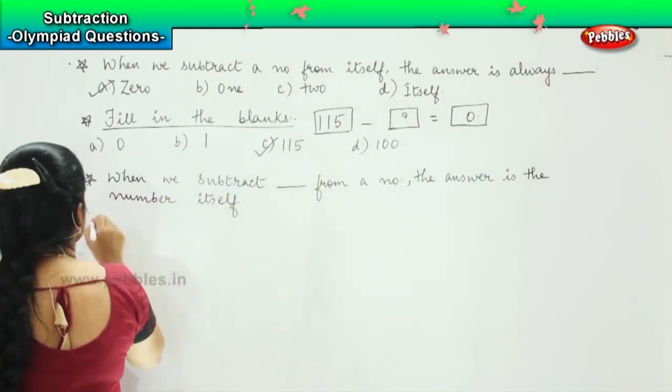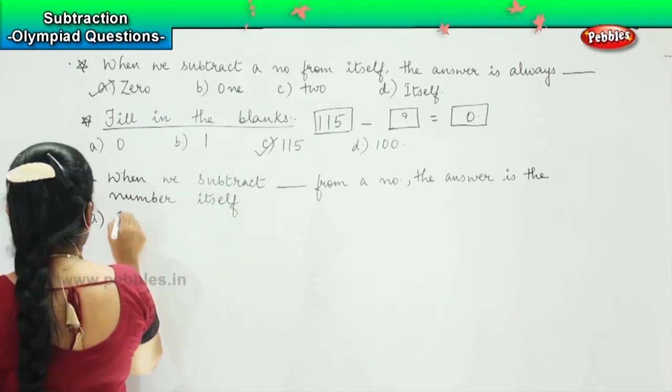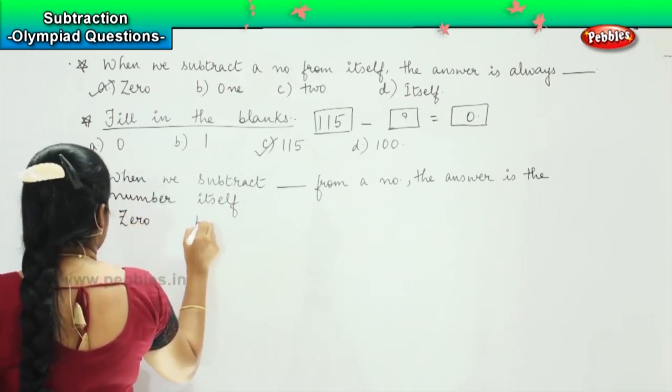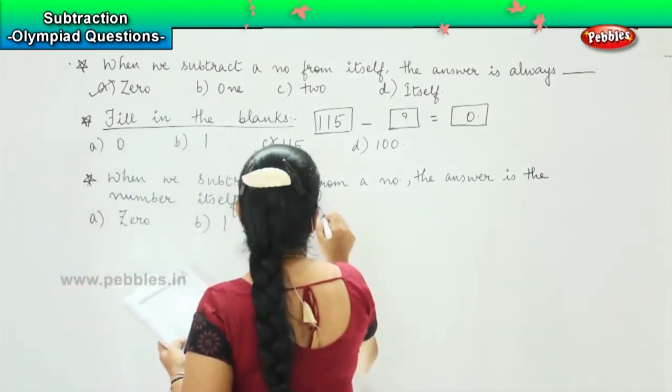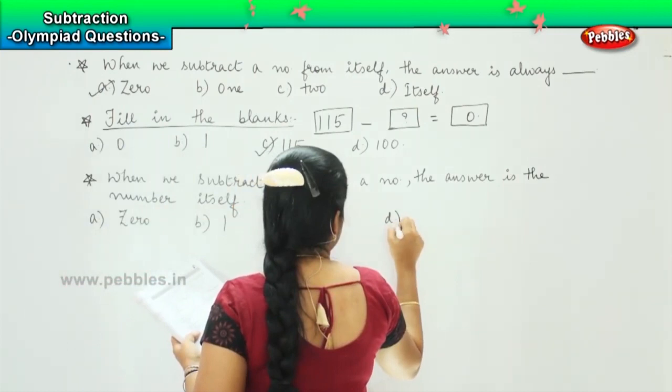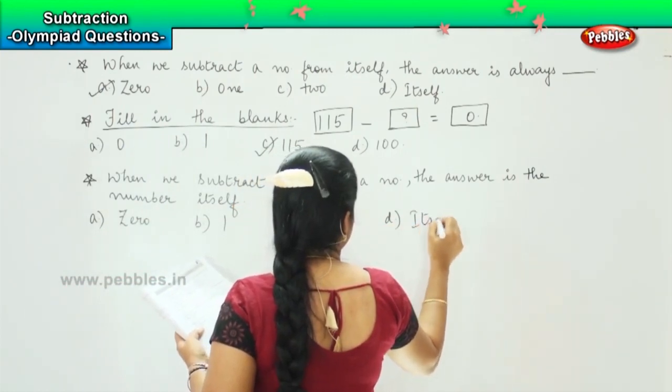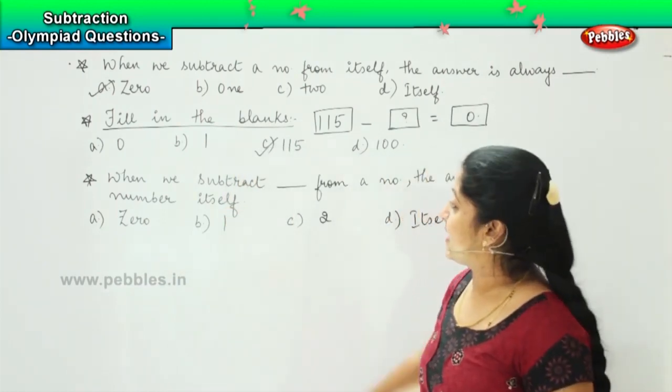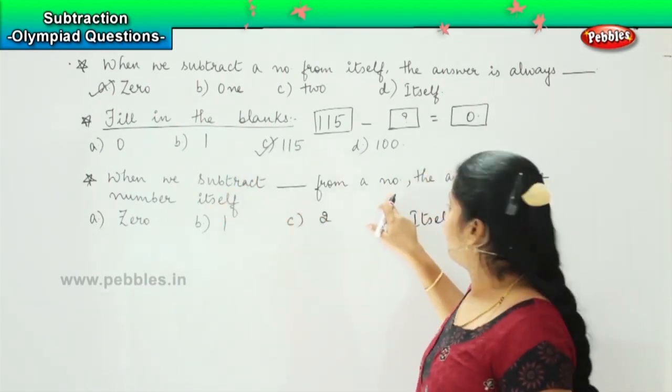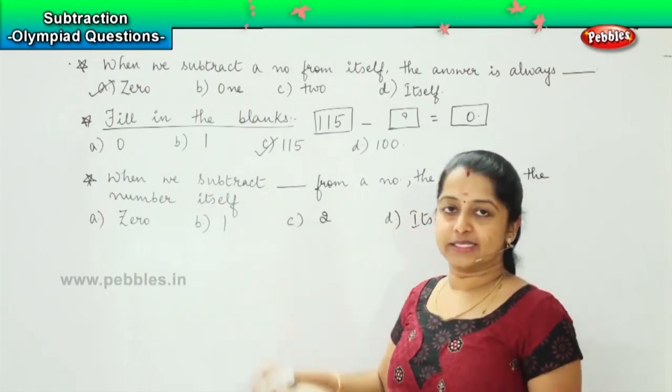The answer is the number itself. And your options are a) 0, b) 1, c) 2, and d) the number itself. Okay. Now, the question says, when we subtract dash from a number, the answer is the number itself.